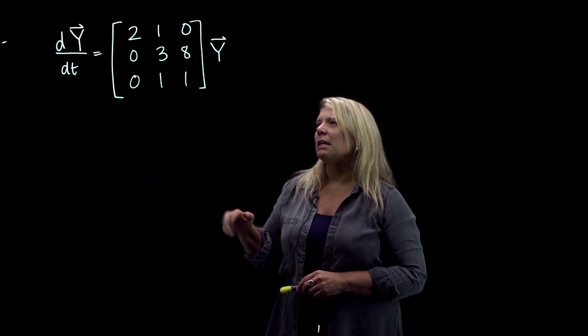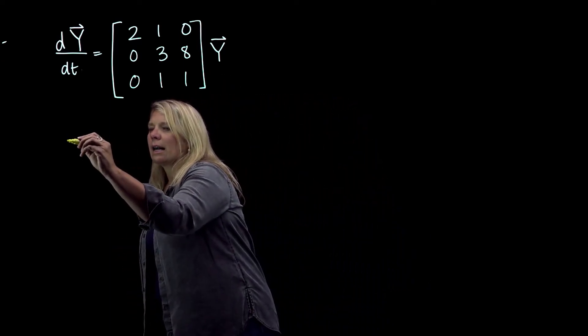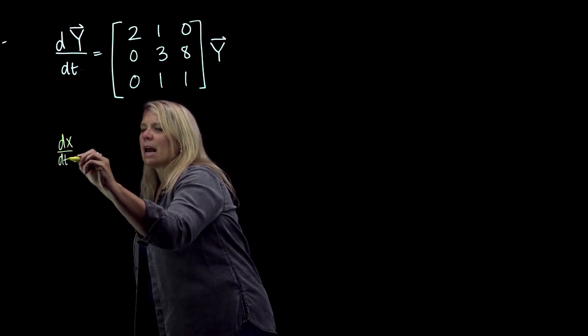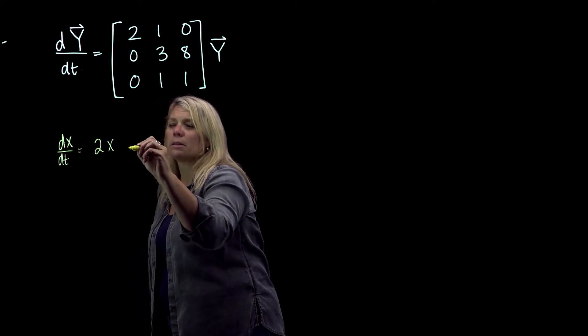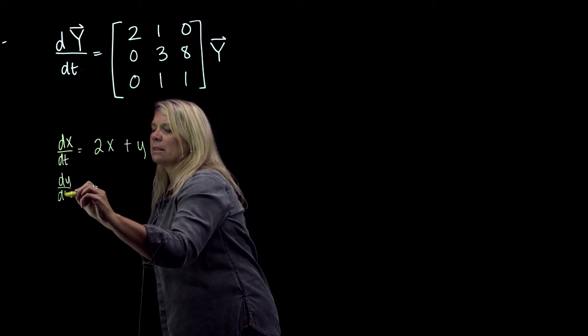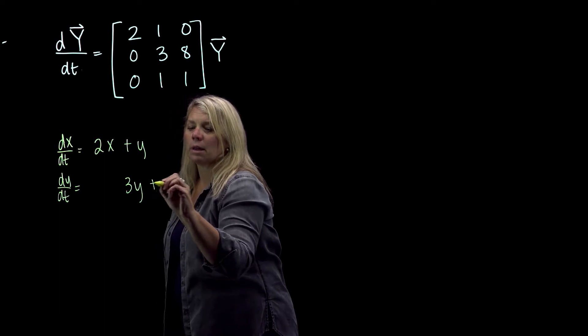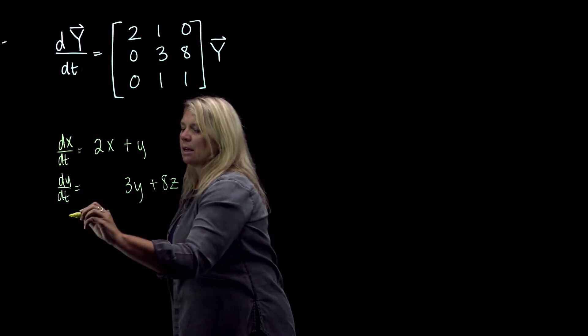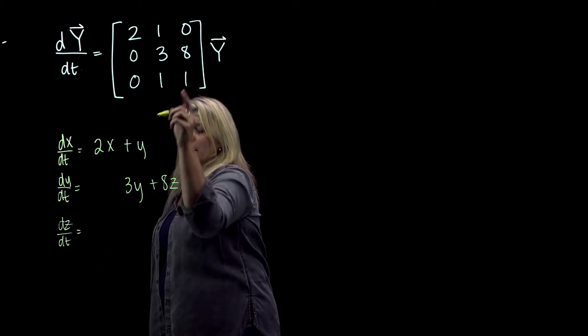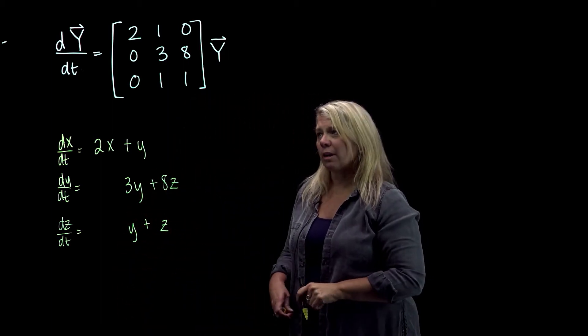dy/dt equals this matrix times y. So you might see the problem written also like this. I'm just going to use x, y, z for my variables. dx/dt equals 2x plus y, dy/dt equals 3y plus 8z, and dz/dt equals y plus z. So we might also see the system written like that.